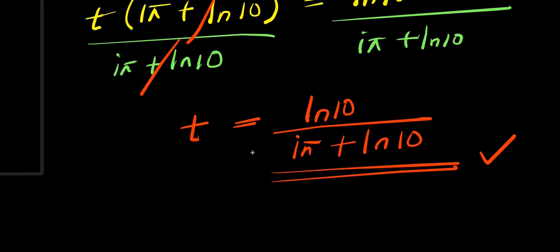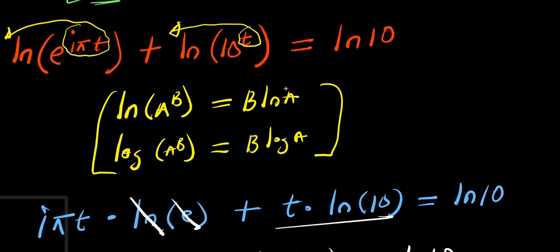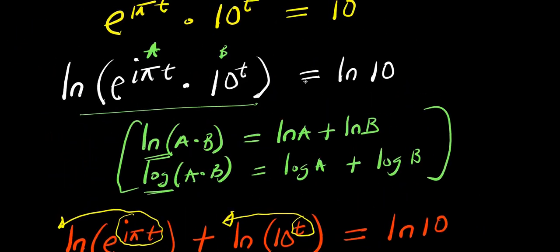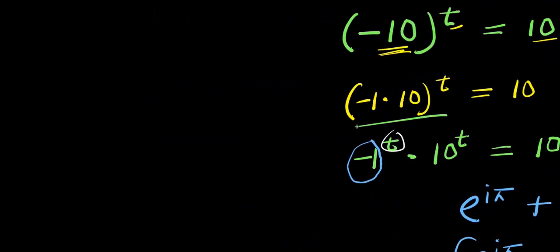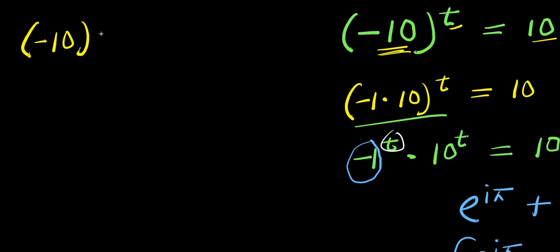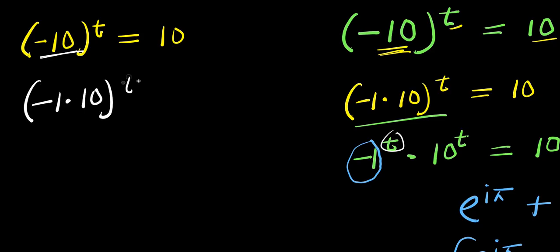Now let's consider another method of solving this particular exponential problem. So we are going to copy the problem again. This time around, we have negative 10 to the power of t equals 10. We are going to make use of the same trick — this is negative 10, I replace it with negative 1 times 10, raised to the power of t, equals 10. Now let's consider this complex rule.